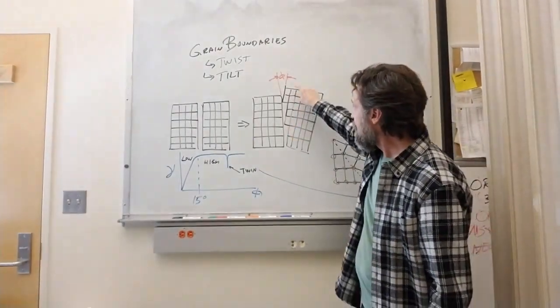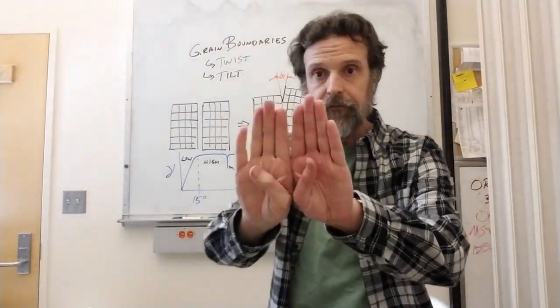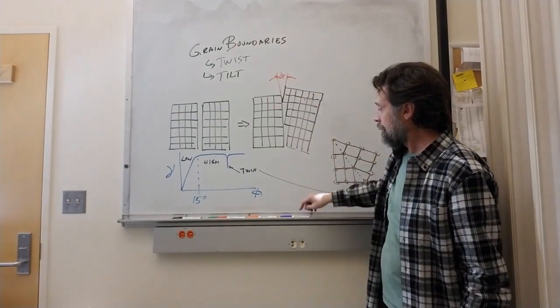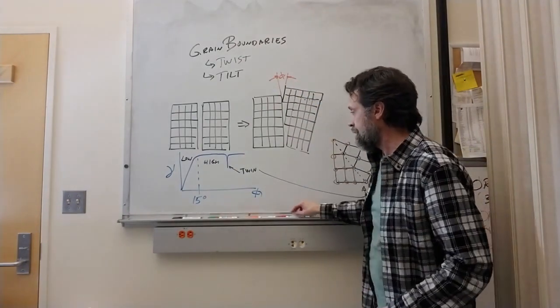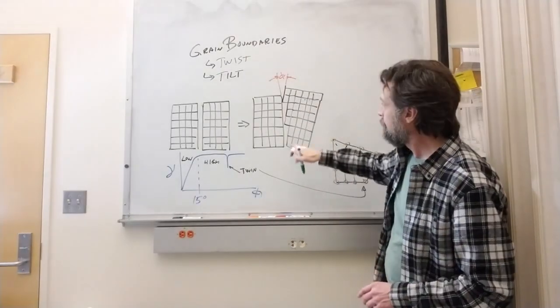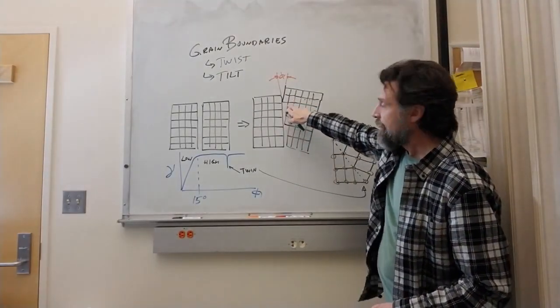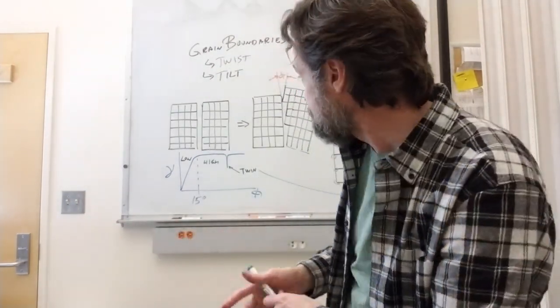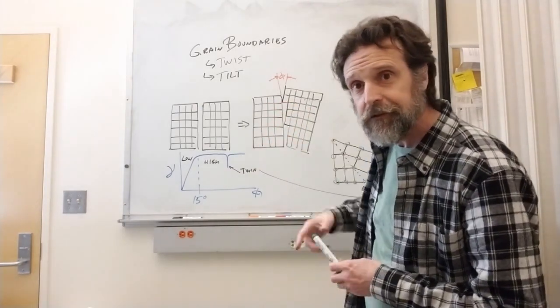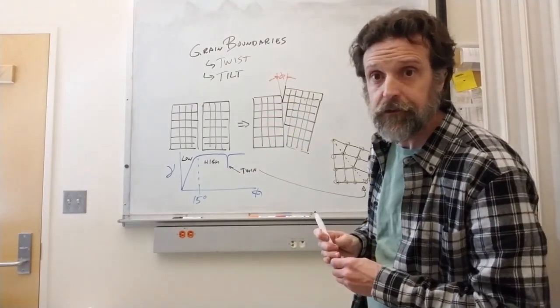In that case, the angle of the tilt is how you characterize the nature of the grain boundary. Where you have this boundary, the volume that's missing is made up by atoms attached here, and when they do that you're essentially creating a series of dislocations.